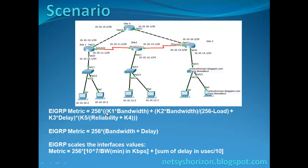By default, K1, K4, and K5 are set to 0, but K2 and K3 are set to 1. So this formula will simplify as shown here. You should know that EIGRP scales the interface values — it will not use the raw bandwidth, but will use 10 to the power of 7 divided by the bandwidth, and will not use the raw delay, but will use the delay divided by 10. So the final formula EIGRP uses is: 256 multiplied by (10^7 divided by the minimum bandwidth in the path) plus the summation of the delays divided by 10.